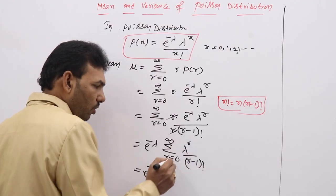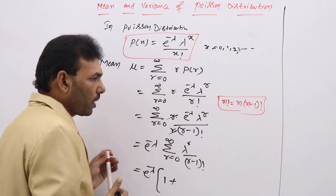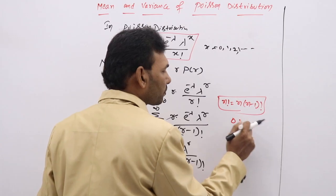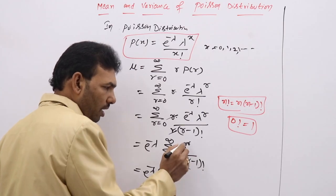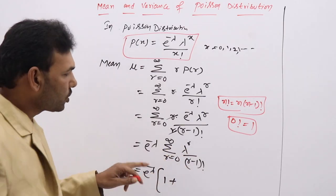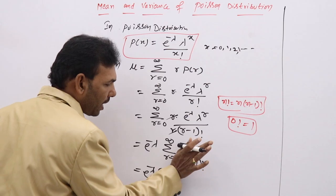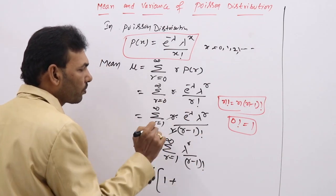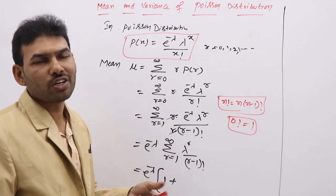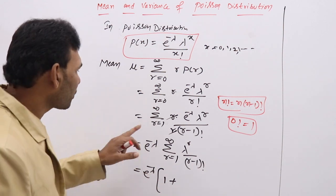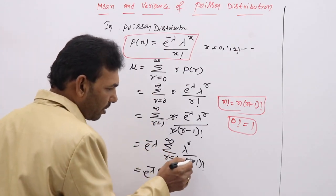Since e^(−λ) has no r terms, take e^(−λ) as constant: e^(−λ) × Σ λ^r / (r−1)!. If we write r = 0, we get (r−1) = −1, and −1 factorial does not exist. That is why the summation runs from r = 1 to infinity. Writing r = 1: λ^1 / 0! = λ. Writing r = 2: λ^2 / 1!. Writing r = 3: λ^3 / 2!. And so on.